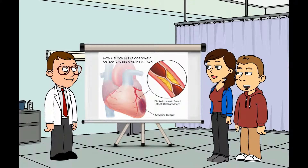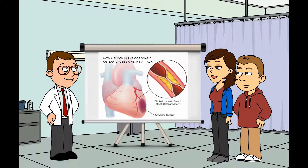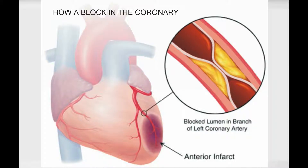Doctor, what causes a heart attack? A heart attack occurs when a blood clot forms in a coronary artery and stops blood flow to the heart muscle, so the muscle is injured or dies. Smoking, high blood pressure, diabetes, high levels of cholesterol, and a family history of heart disease increase the risk of heart attacks.